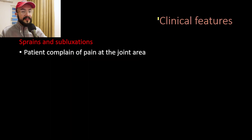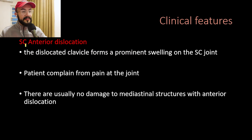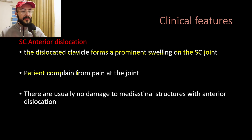Now let's talk about the clinical features of SC joint injuries. In sprains and subluxations, the patient complains of pain at the joint area, and that is usually the only complaint. In anterior dislocation of the SC joint, the dislocated clavicle forms a prominent swelling over the SC joint area, and the patient complains of pain at the joint. There is usually no damage to the mediastinal structures with anterior dislocation, because the clavicle dislocates anteriorly, away from the mediastinum.